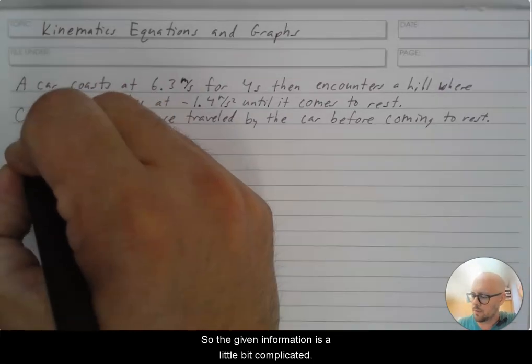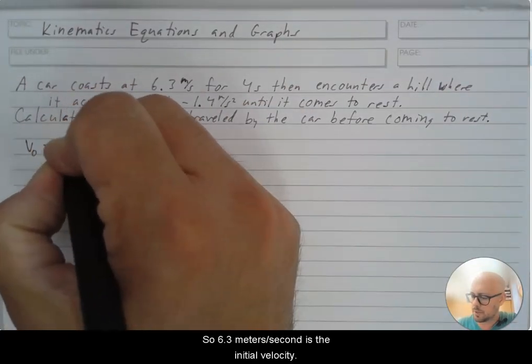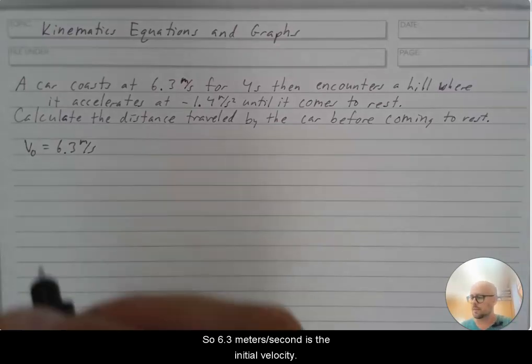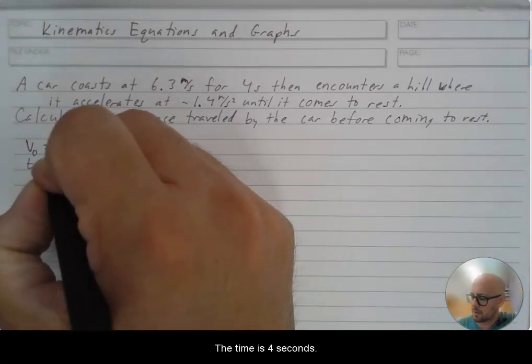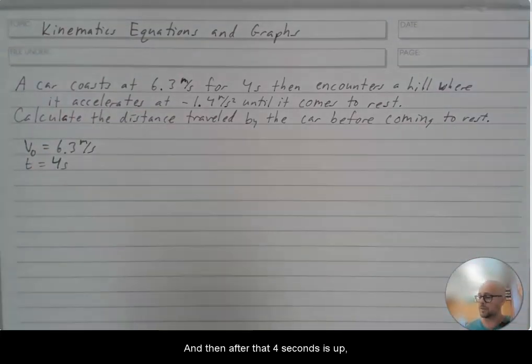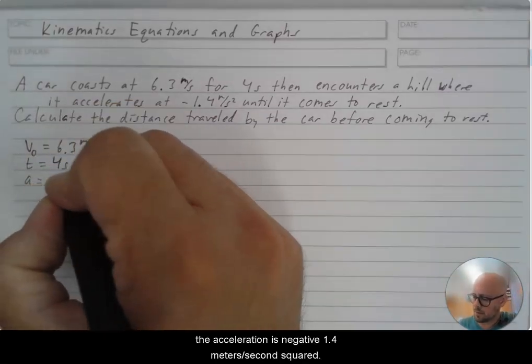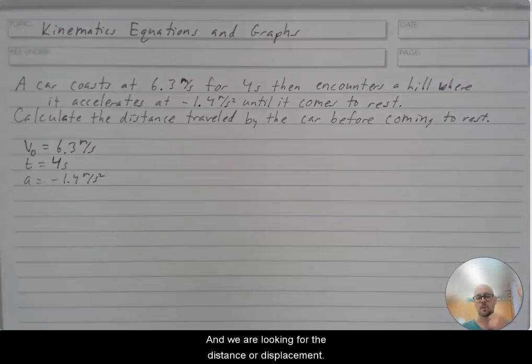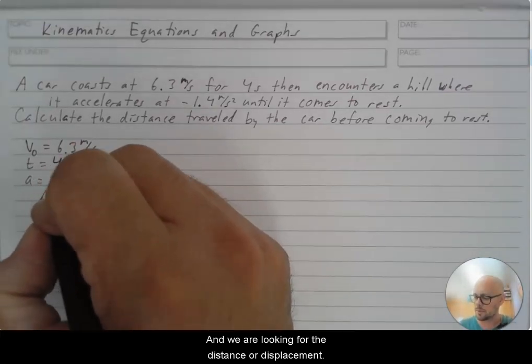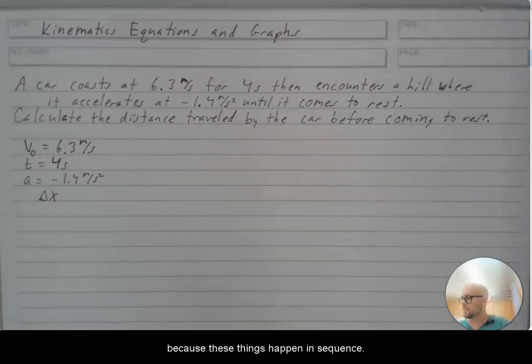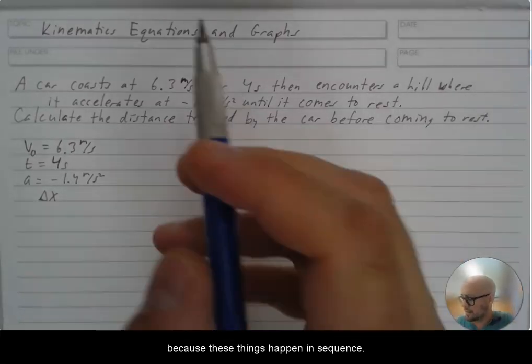So the given information is a little bit complicated. So 6.3 meters per second is the initial velocity. The time is four seconds and then after that four seconds is up, the acceleration is negative 1.4 meters per second squared. And we are looking for the distance or displacement. And so that's our given information. But we can't use it the same way that we usually have because these things happen in sequence.